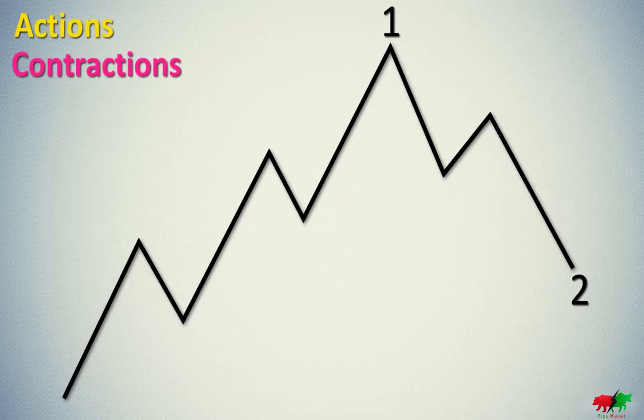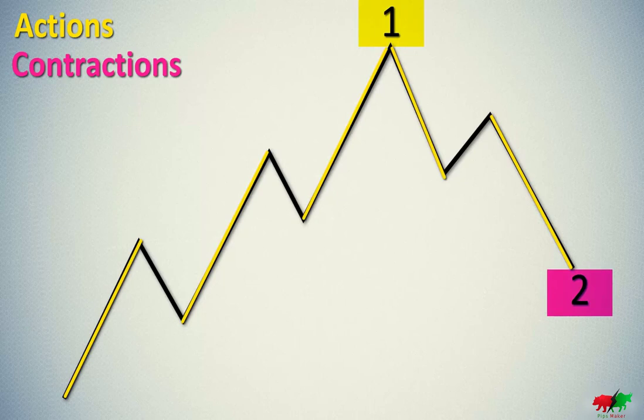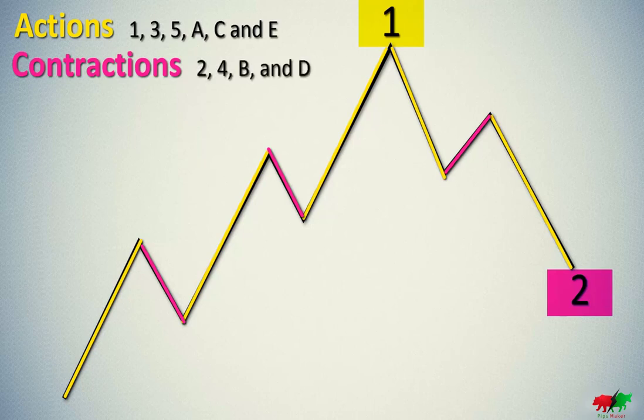To be more precise, each wave can go with the direction of the wave of the higher grade. In this case, it is the action wave, or going in the opposite direction as a correction wave of the main trend, the contraction wave. Action waves we mark with odd numbers like 1, 3, and 5, and with the letters A, C, and sometimes E. The contraction waves are marked with even numbers like 2, 4, B, and sometimes D.